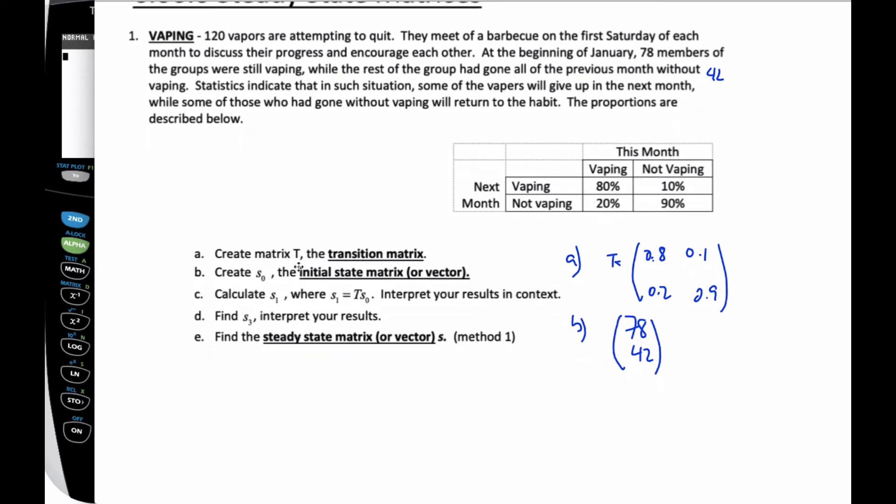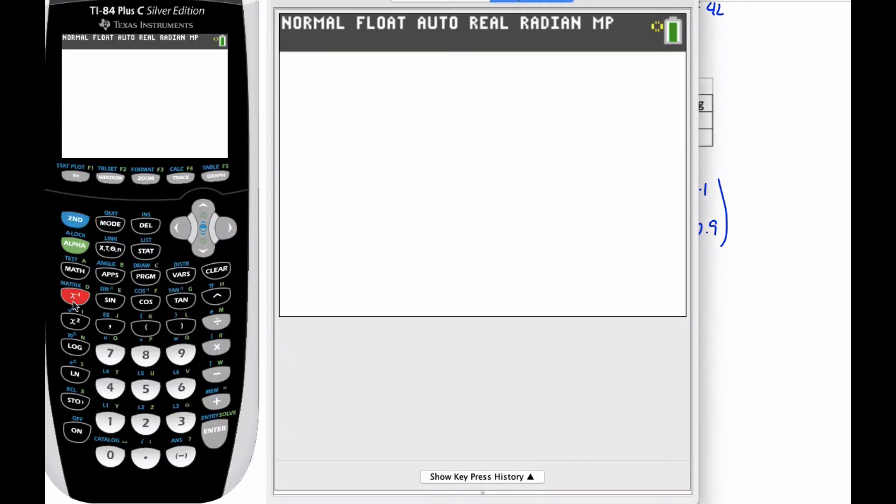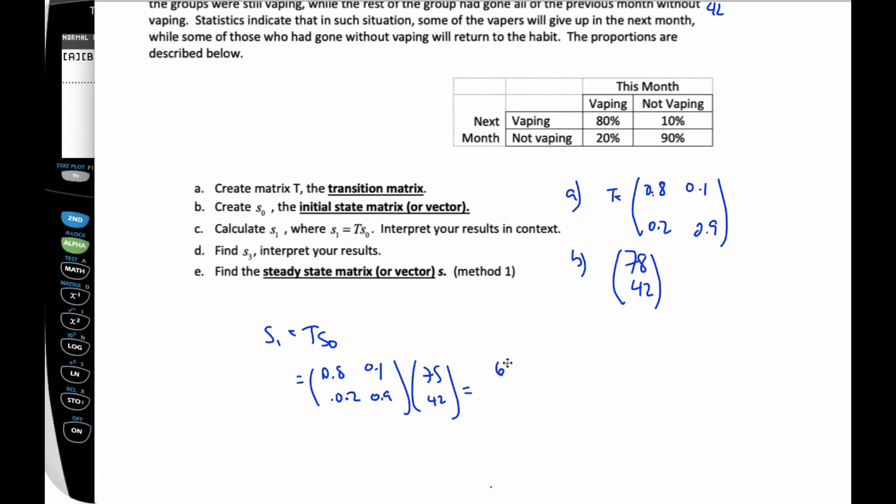Okay, and so now it says calculate S1. That's the state after we've gone through one month. So S1 is equal to T times S sub 0. So when I do that, it's going to be 0.8 and 0.2, 0.1 and 0.9 times the 78 and the 42. And if I come along here and put it into my calculator, I've already put it into matrix A and I've already put it into matrix B, so I can just punch it out. And when I find it, I get 66.6 and 53.4. So 66.6 and 53.4.